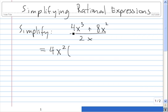If we take 4x² out of 4x³, we're left with x. If we take 4x² out of 8x², we're left with plus 2. And then we still have our same denominator of 2x.